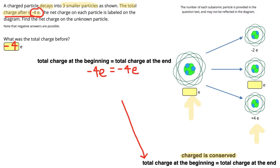Now we need to figure out our missing charges. Before, we just had one particle and we know the total charge was negative 4e, so that particle must have a charge of negative 4e. Afterwards, however, we have three different particles. So we add up the charges of all three. We had negative 2e, plus something unknown — I'm going to call it x — plus the charge of the third particle, which was positive 4e.